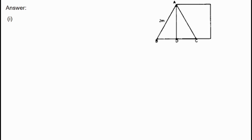We write down the height of BC. AB is 2 meters, so the height of BC is 1 meter. If we write down the height of BC, our square is one side.